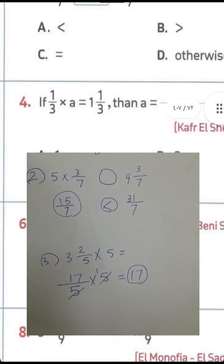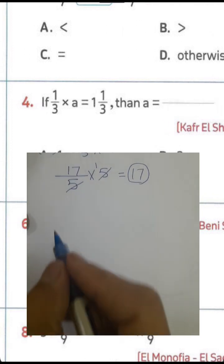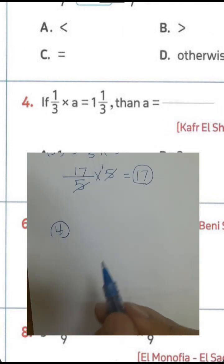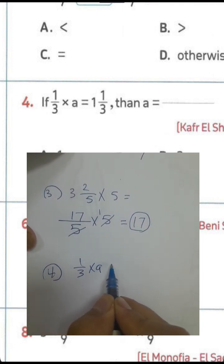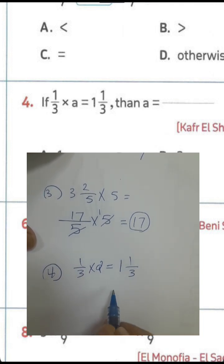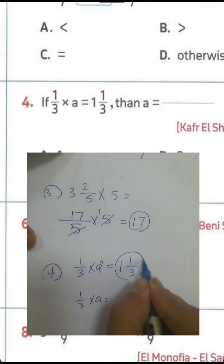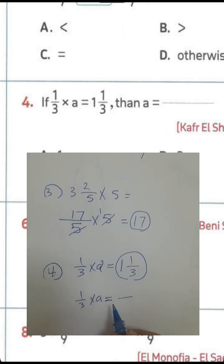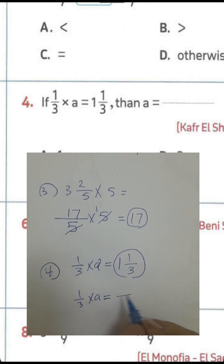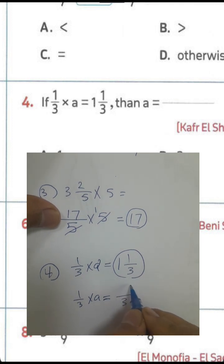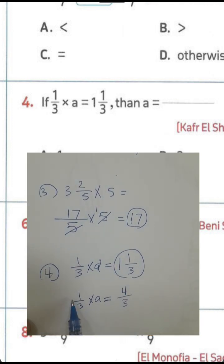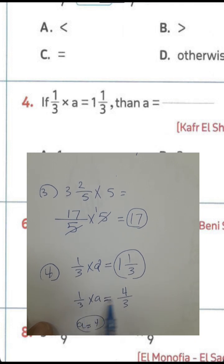Question number 4: if 1 and 1 over 3 times something equals 1 over 3, we will find the value of a. First step, we must convert 1 and 1 over 3. We know the denominator is 3: 1 times 3 equals 3, plus 1 equals 4. Then a times 3 equals 4 over 3, so the value of a equals 4, because 4 times 1 over 3 will be 4 over 3.